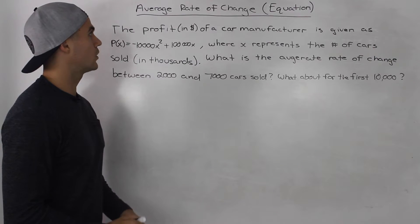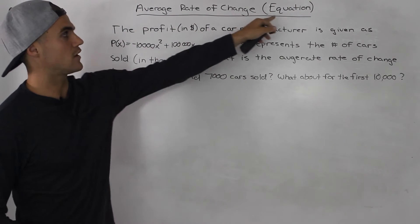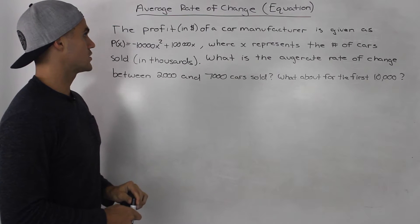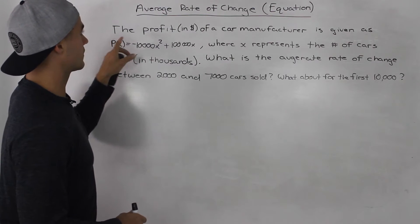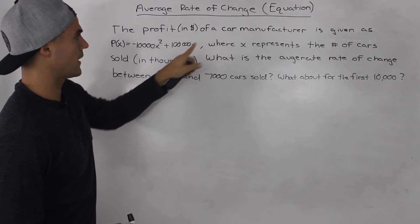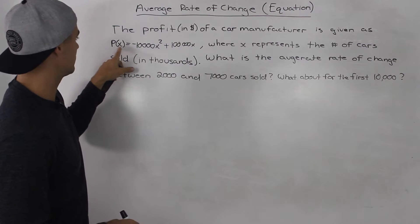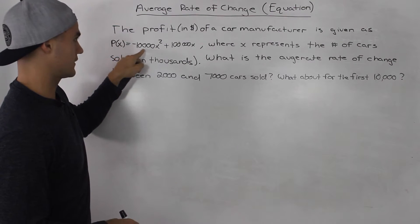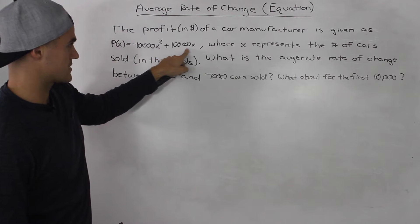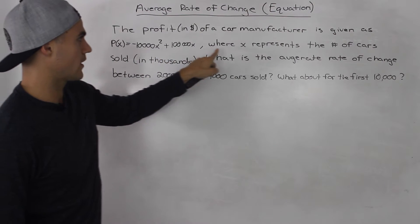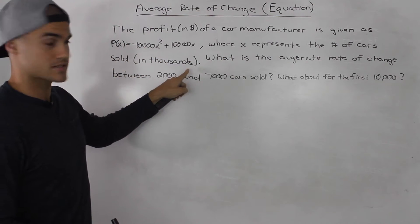In this video, we're going to find the average rate of change from an equation. So we have this scenario: the profit in dollars of a car manufacturer is given as P(x) = -10,000x² + 100,000x, where x represents the number of cars sold in thousands.